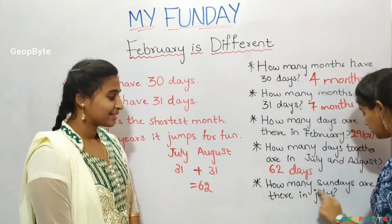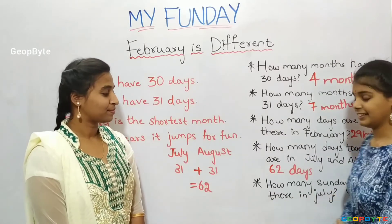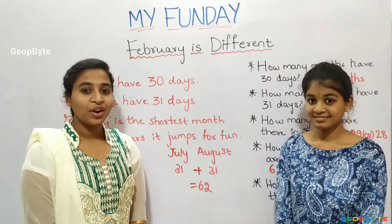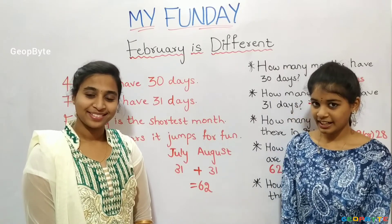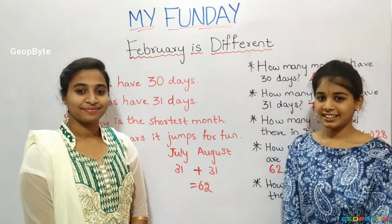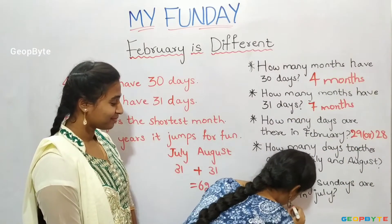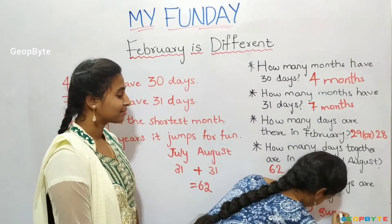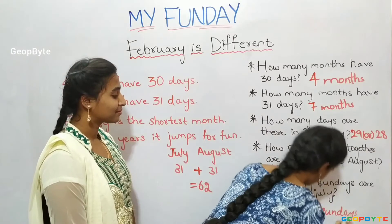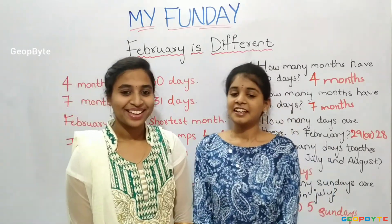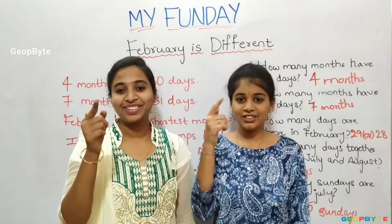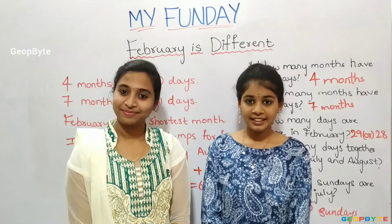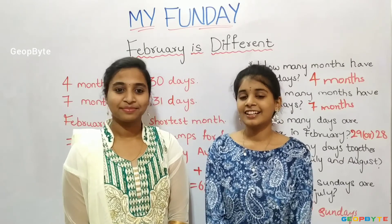How many Sundays are there in July? Children, usually July will have 4 or 5 Sundays. Let us write: 4 or 5 Sundays. Hey kids, there is a small activity for you — try to learn the months in a year. Now we have completely understood the topic: February is Different.